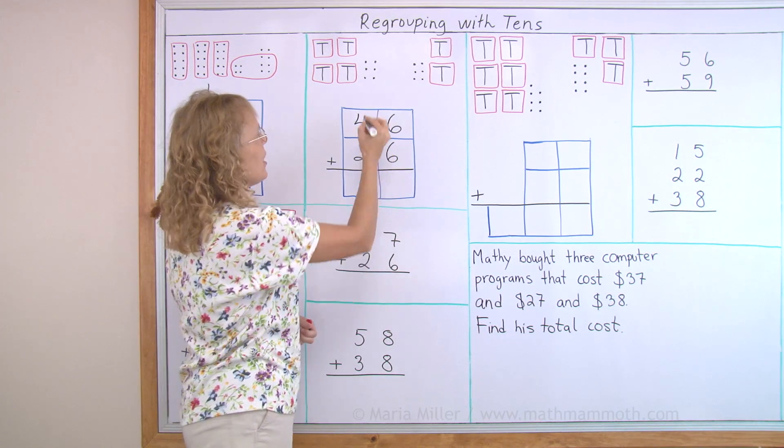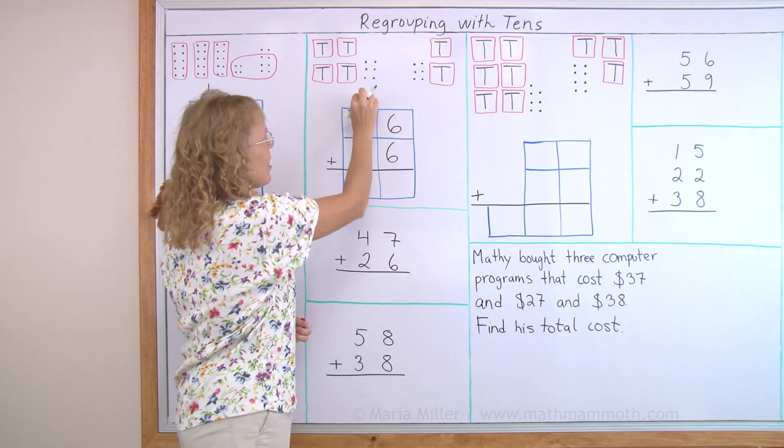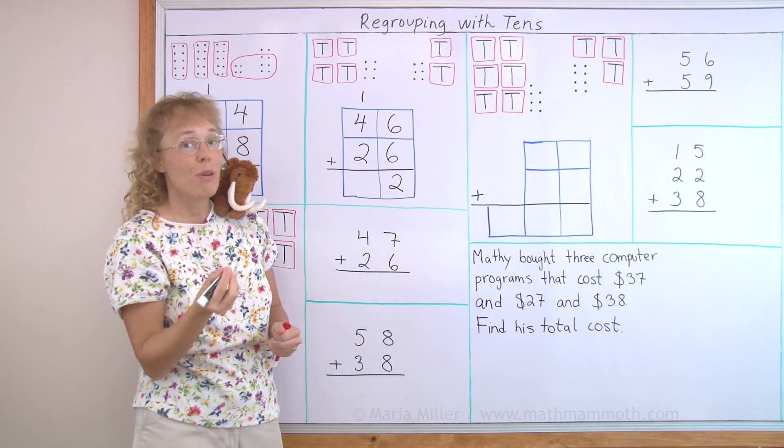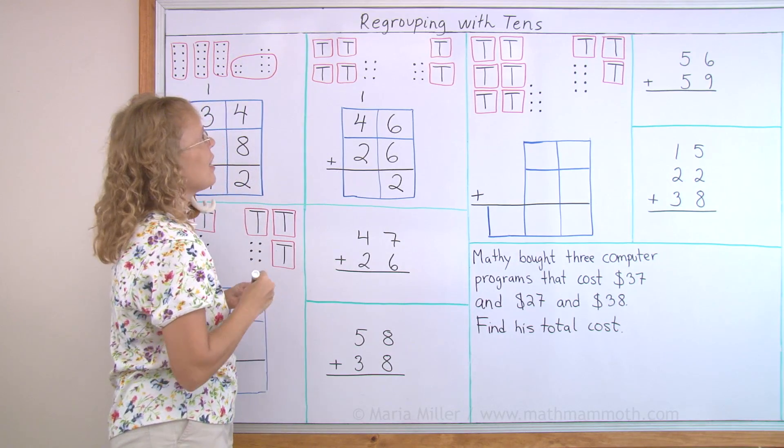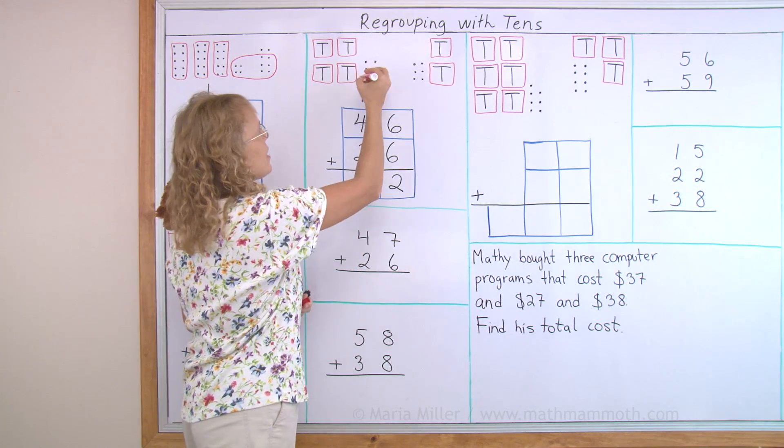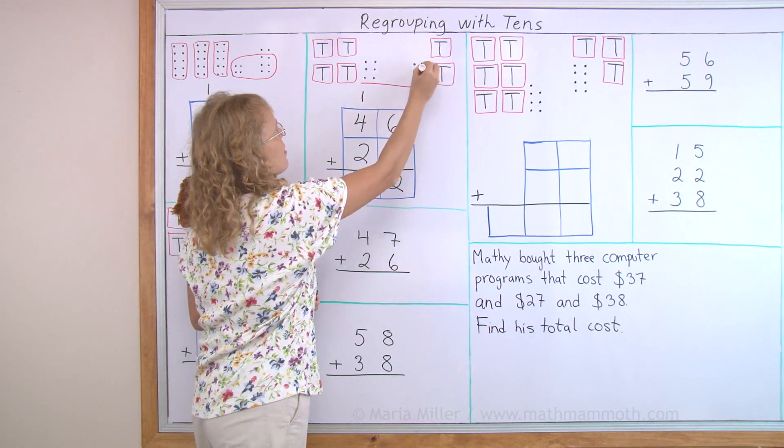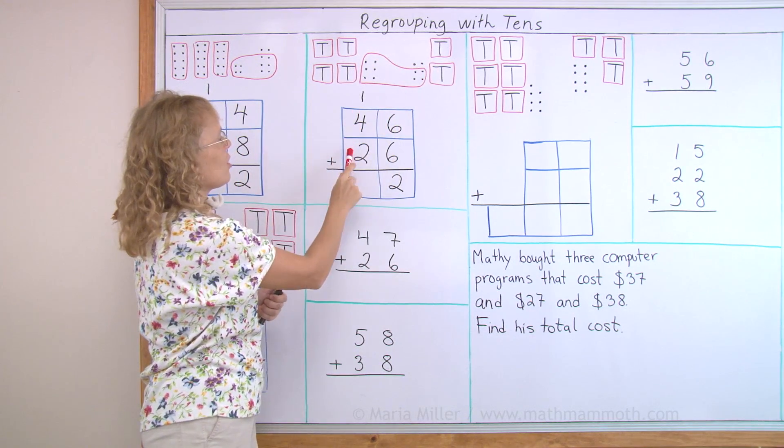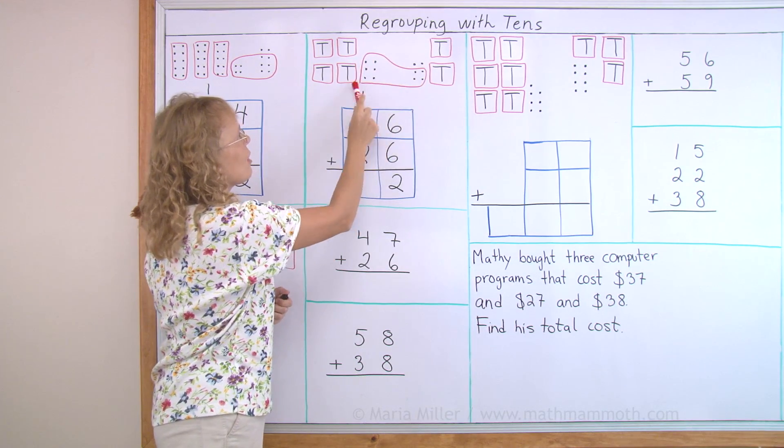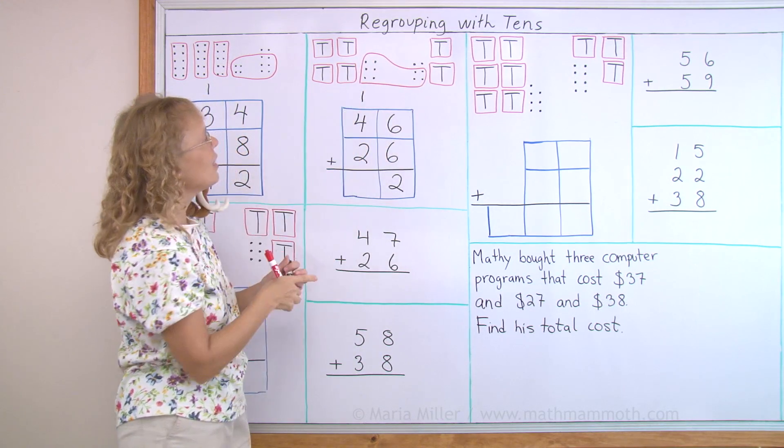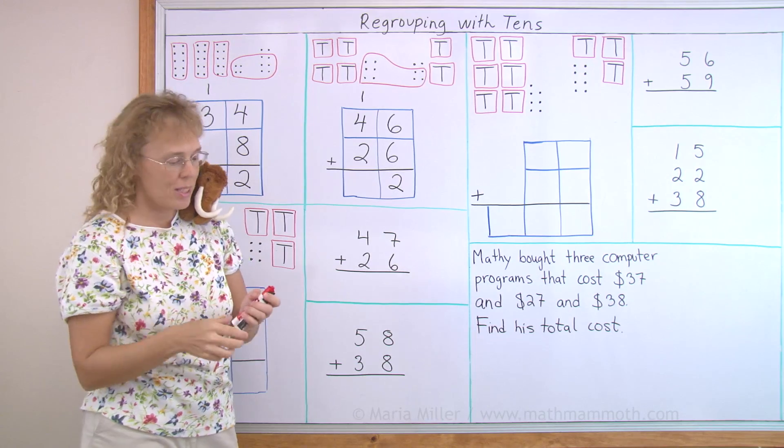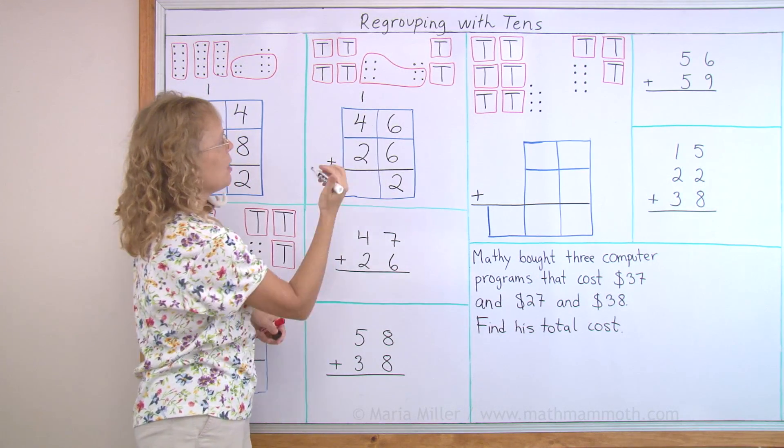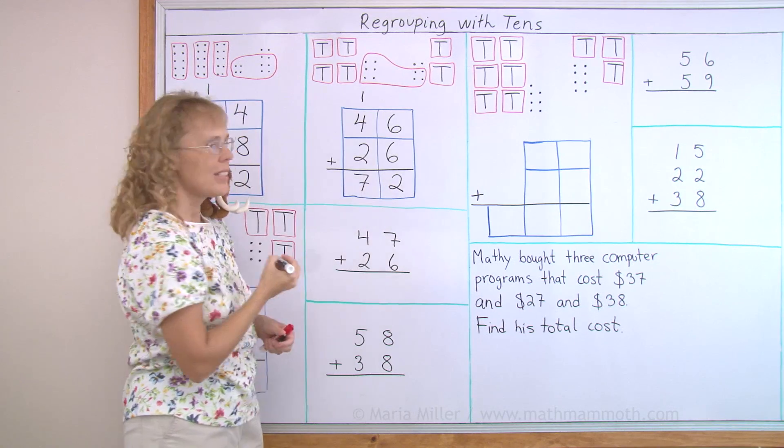And I will write the one ten with the other tens here in this column. And the two gets written here because it is two ones or two little dots. And in the picture, I show it like this. I make a ten. So now I have the four tens and the two tens and this one new ten. The one new ten is written as one here in the tens column. And then I add the tens. One and four and two tens makes seven tens. Seventy-two.